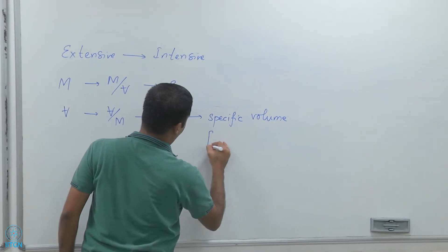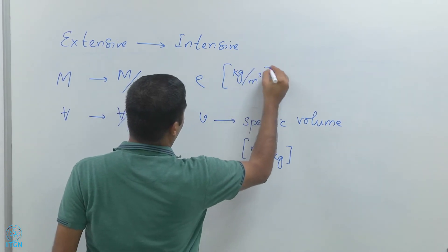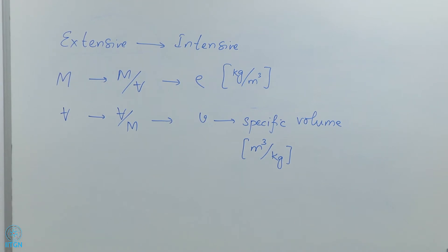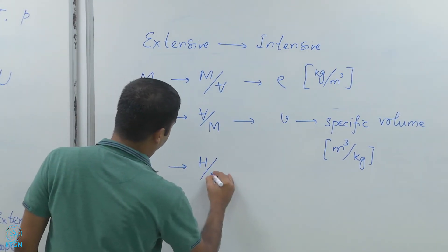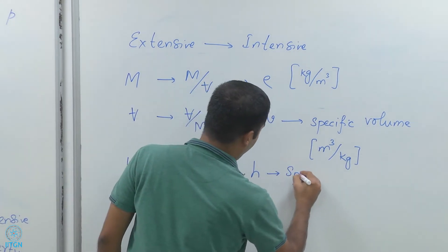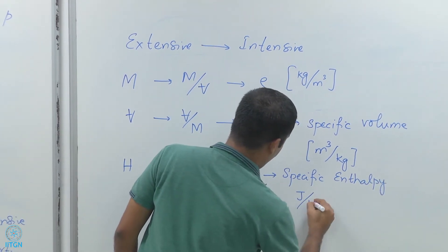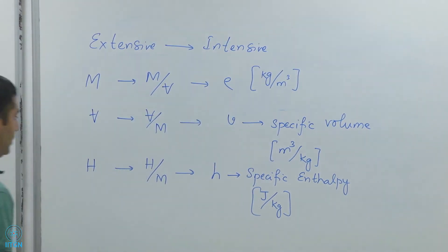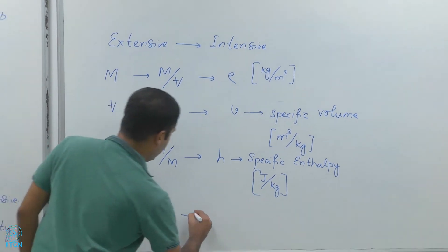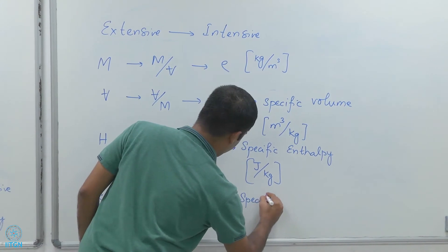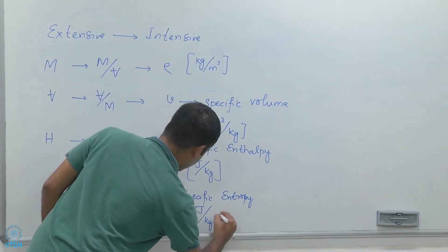Specific volume has units of meter cubed per kg, and density has units of kg per meter cubed. I can always go from extensive properties to intensive properties. For example, I can take enthalpy and divide it by mass to get specific enthalpy H, with units of joule per kg. Similarly, I can take entropy and divide it by mass to get specific entropy, also in joule per kg.